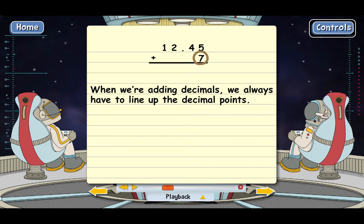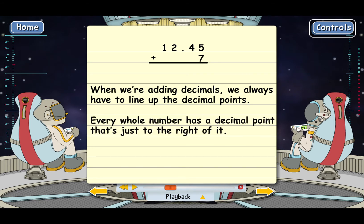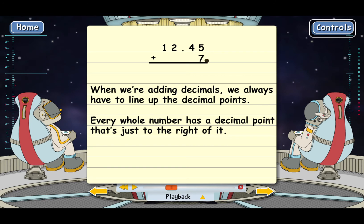Well, it's pretty easy, actually, because 7 really does have a decimal point. It's just not showing. Every whole number has a decimal point that's just to the right of it. So we can change 7 to 7 point. Now we can put the 7 point in the right place. It needs to go here so that the decimal points are lined up.